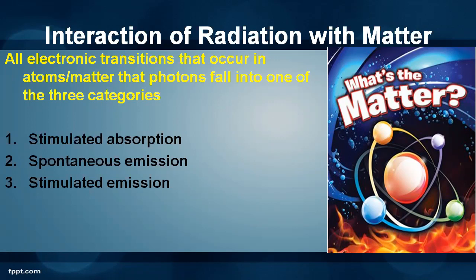If an electron has a high amount of energy, it can vibrate or rotate in a higher energy level. If it has the lowest energy, then it rotates in the lowest orbit. If you supply energy to the lowest orbit electron, it can jump to the higher energy level. And a higher energy electron comes to the ground state by losing its energy. So in this process, any electronic transition — that is, how the electrons are moving from one energy level to another — every electronic transition that occurs in an atom or matter falls into one of the following three categories.